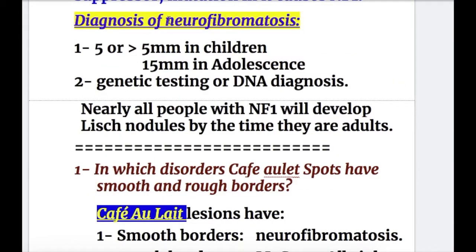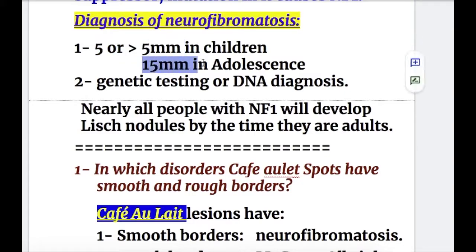Regarding the diagnosis of neurofibromatosis: five or more café-au-lait spots are required, with a diameter of more than 5 mm in children or more than 15 mm in adolescents. Genetic testing of DNA is also used for diagnosis.